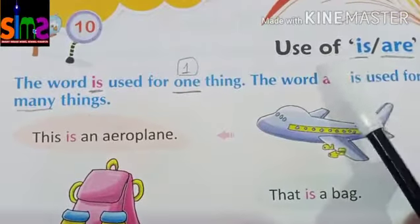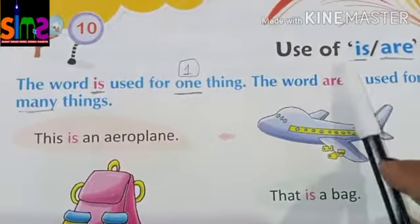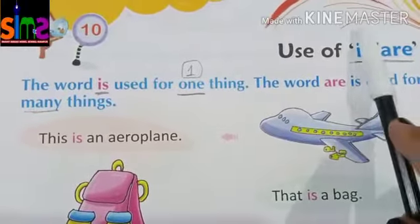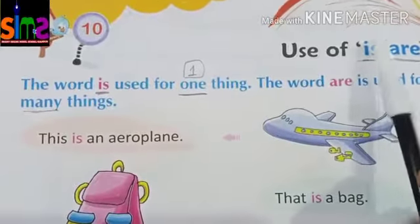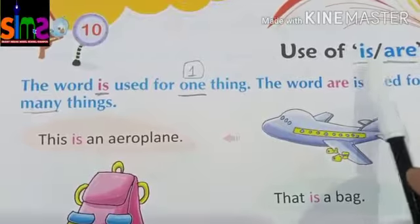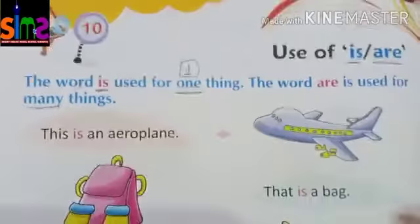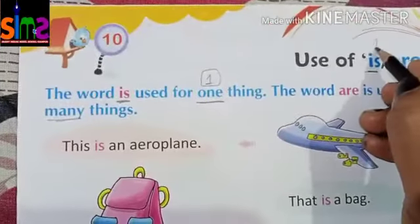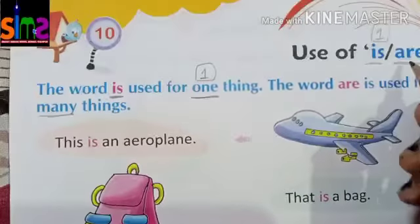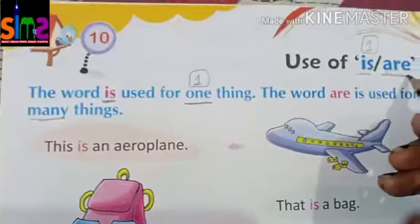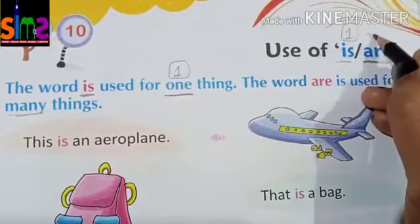Let's understand some examples. So kids, first we will revise: we use 'is' for only one thing, and 'are' for many things.